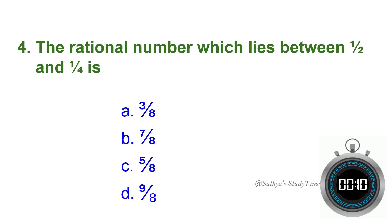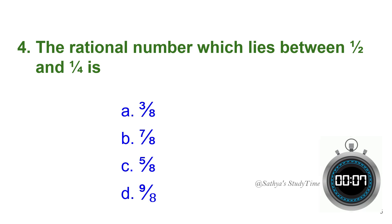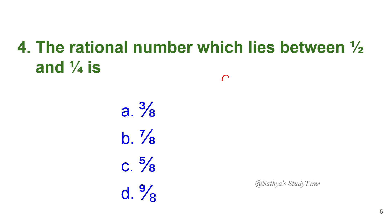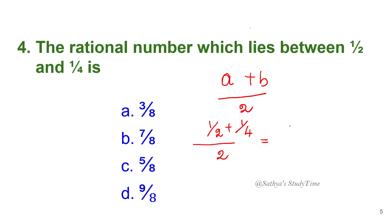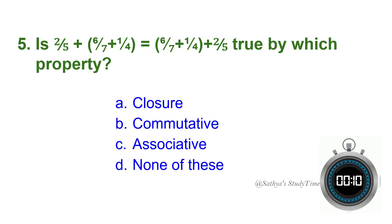Fourth question: The rational number which lies between 1/2 and 1/4 is — your time starts now. The formula is: (a + b) / 2 gives the rational number between a and b. For 1/2 and 1/4: (1/2 + 1/4) / 2 = (3/4) / 2 = 3/8. So the answer is option A: 3/8.